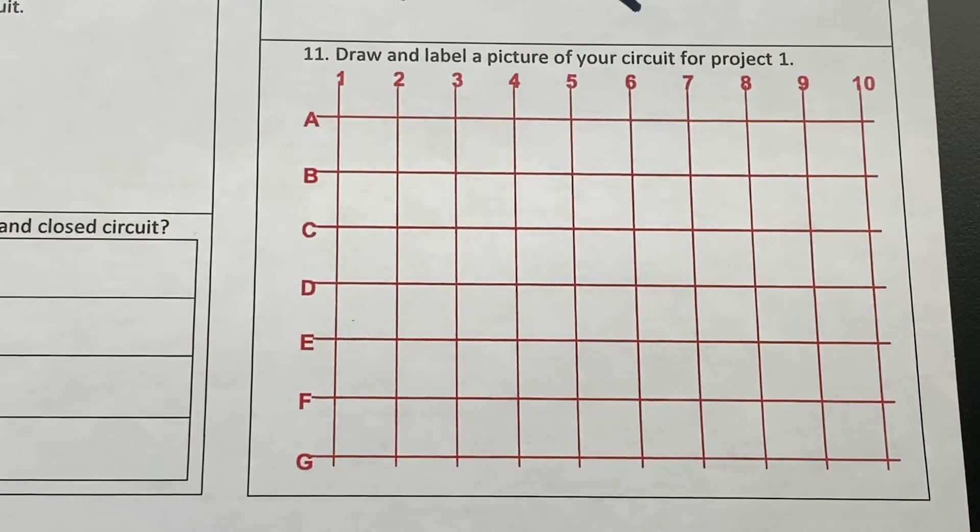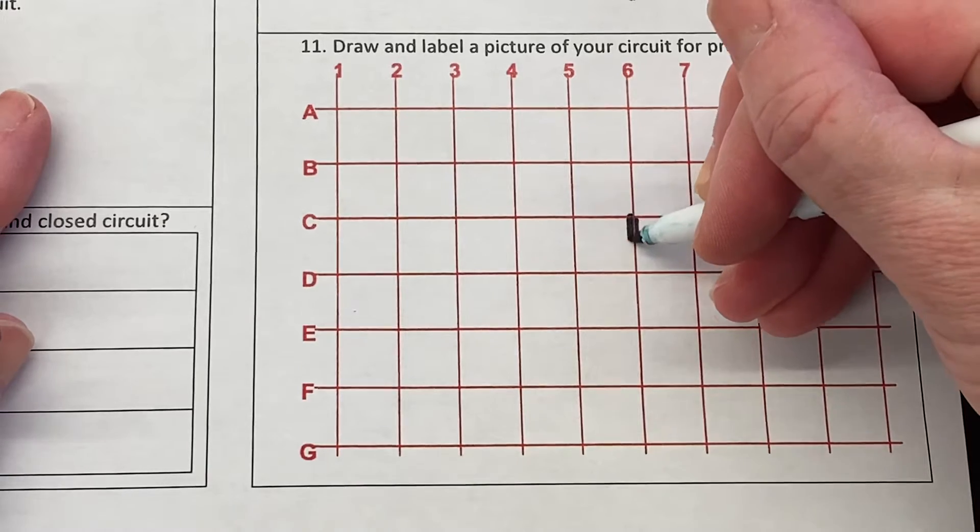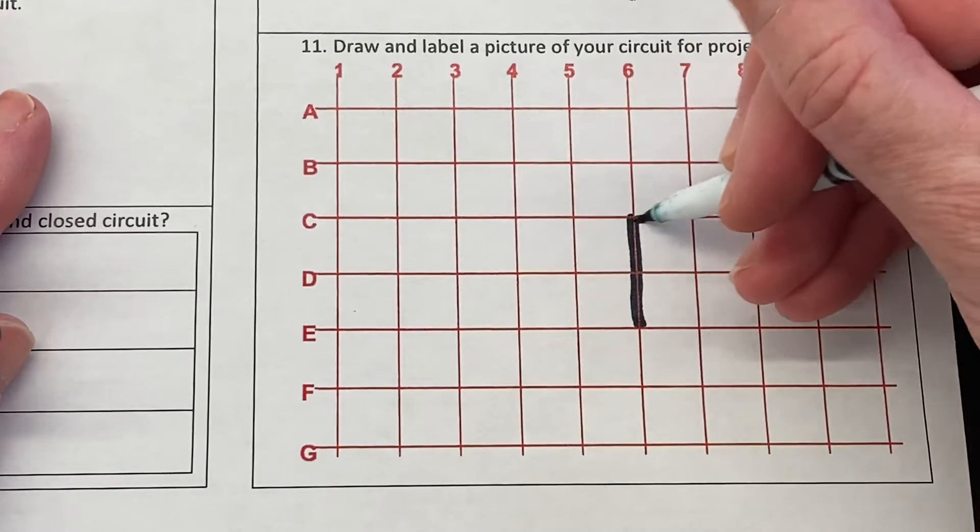If I look at my circuit, the top corner of that battery pack starts on c6 and goes down to e6. So it starts here on c6 and goes down to e6, and it basically takes up four squares.